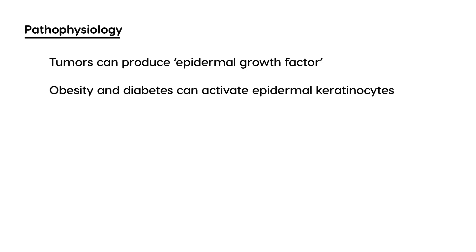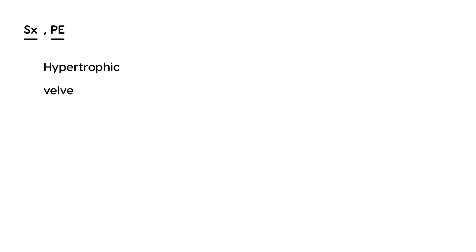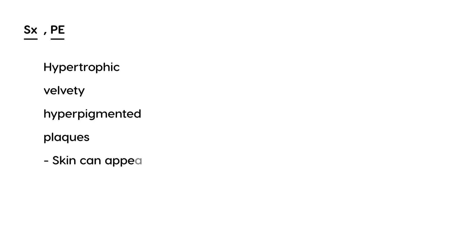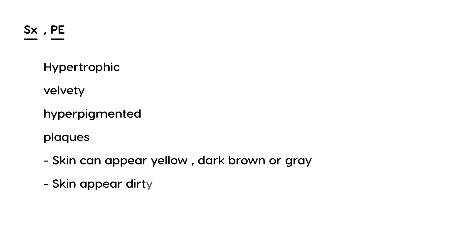In terms of symptoms or physical exam findings, commonly used terms to describe this on a clinical vignette include hypertrophic, velvety, and hyperpigmented — and they are referred to as plaques. In terms of color, the skin can appear yellow, dark brown, or even gray, and the skin is often described as appearing dirty or darker than normal.